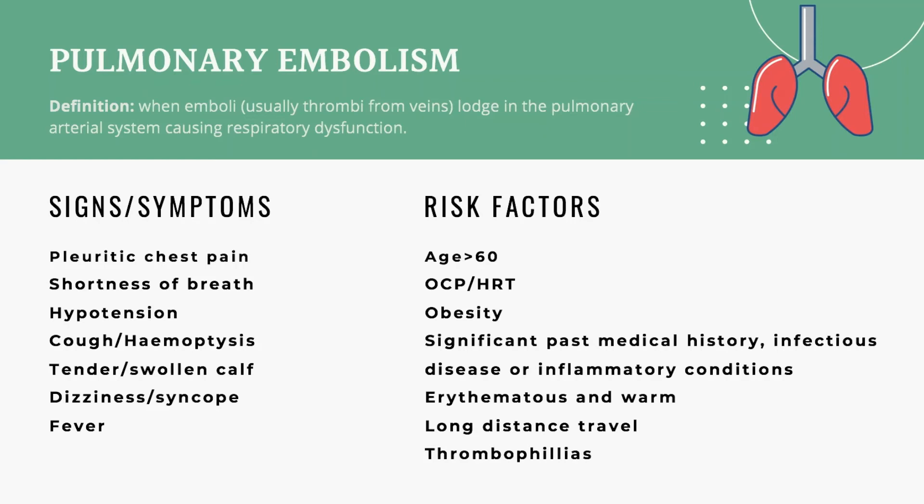Hypotension, dizziness, and syncope point more towards a massive PE causing systemic compromise. Risk factors for pulmonary embolism include age over 60, taking the oral contraceptive pill, hormone replacement therapy, obesity, significant past medical history of infectious disease or inflammatory conditions, an erythematous and warm calf, long-distance travel, and thrombophilias. Some of these risk factors are quite similar to those for deep vein thrombosis.